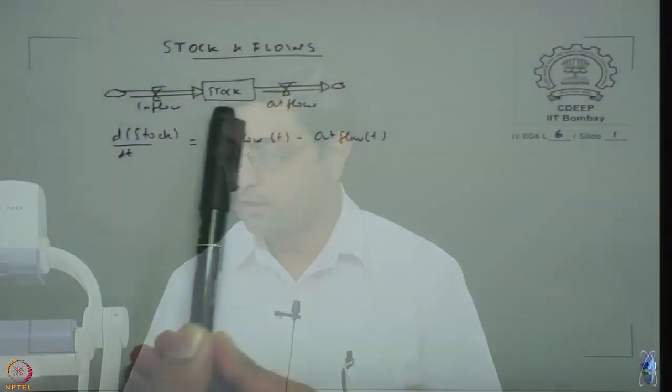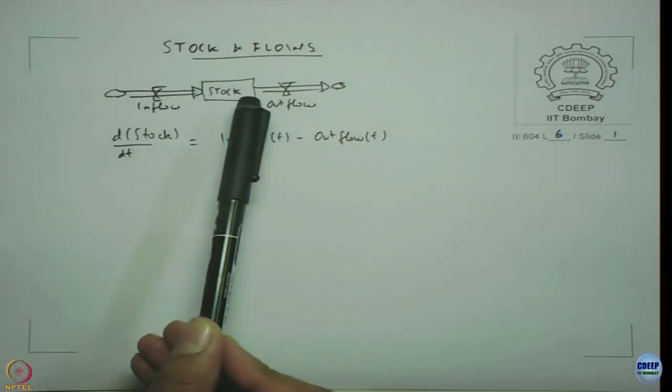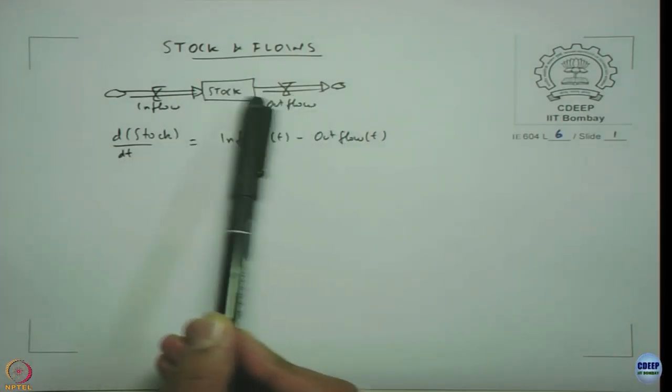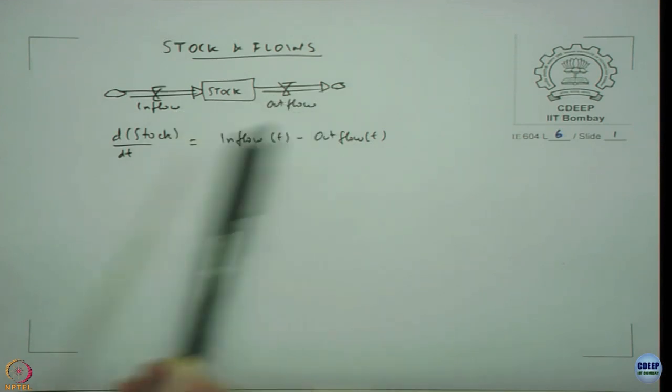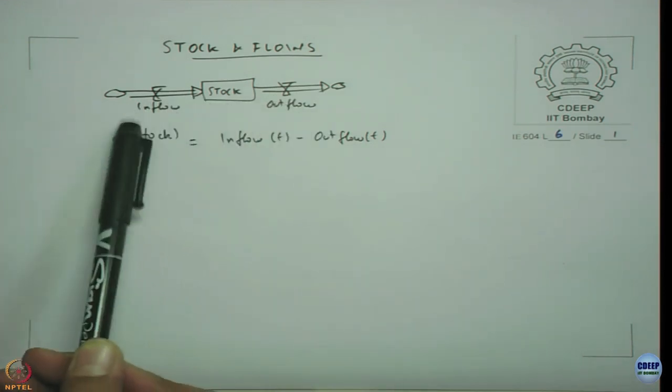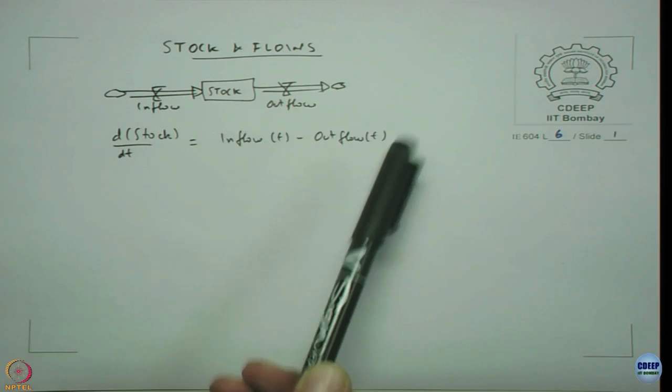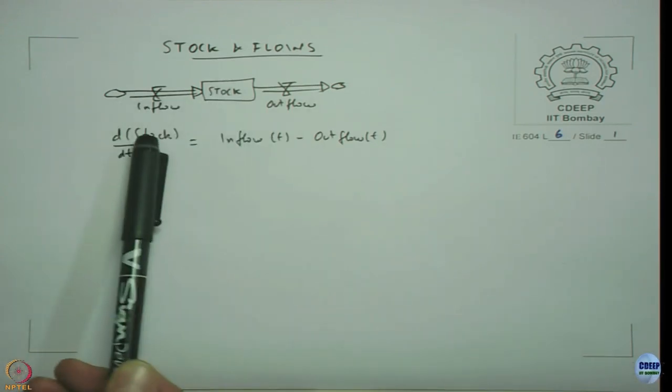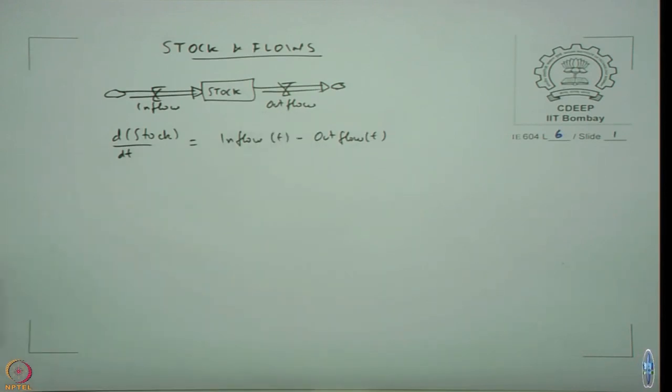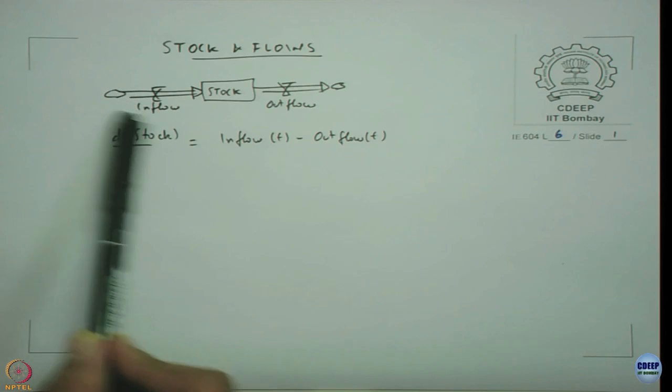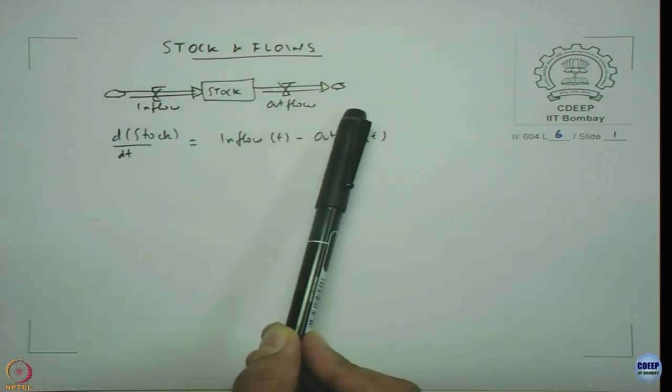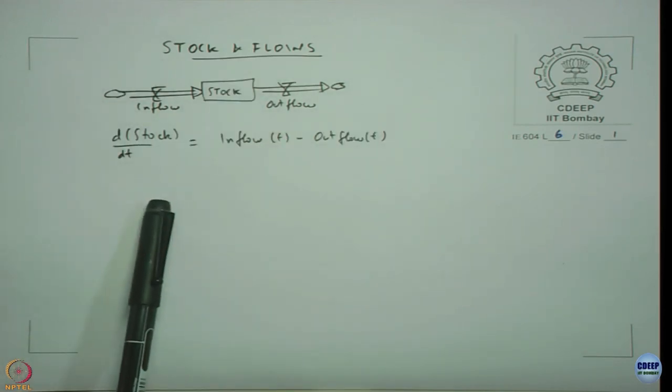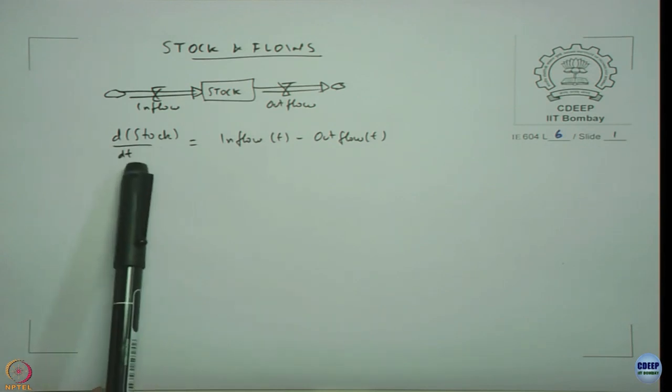Stock is represented as a rectangle and flows are represented by thick arrows with valves in it. Direction of arrows shows whether we are adding to the stock or removing from the stock and whatever we add we are calling it as inflows, whatever we remove we are calling as outflows. It is important to note that the underlying equation to this graphical representation is nothing but a differential equation where the change in stock over time t is nothing but inflow minus outflow.